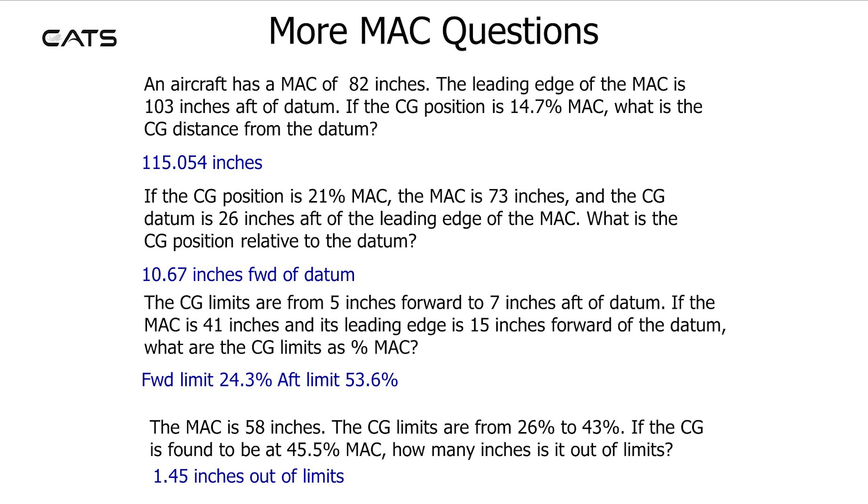The MAC is 58 inches. The CG limits are from 26% to 43%. If the CG is found to be at 45.5% MAC, how many inches is it out of limits? 1.45 inches out of limits.